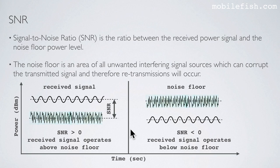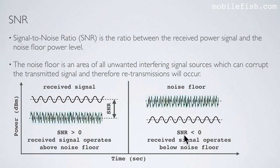In this picture you will see two situations. In this situation the SNR value is greater than zero, which means the received signal operates above the noise floor. In this situation the SNR value is smaller than zero, which means the received signal operates below the noise floor.